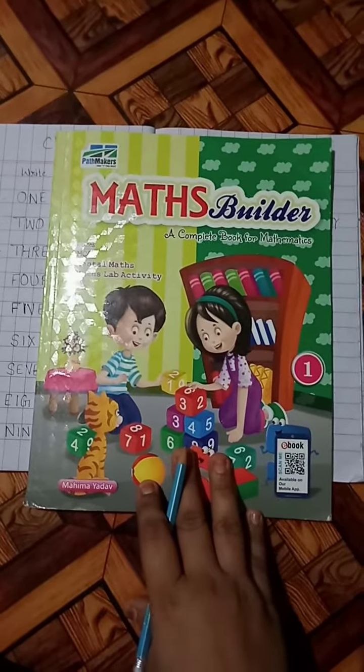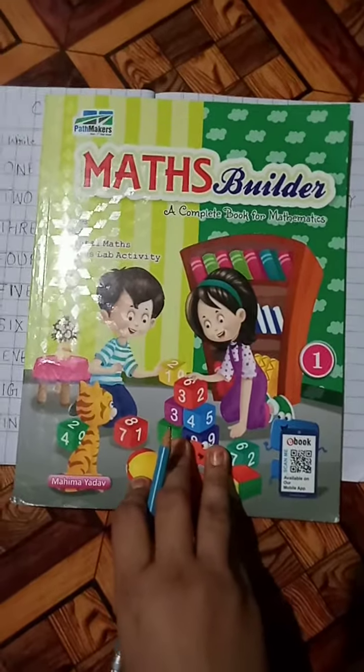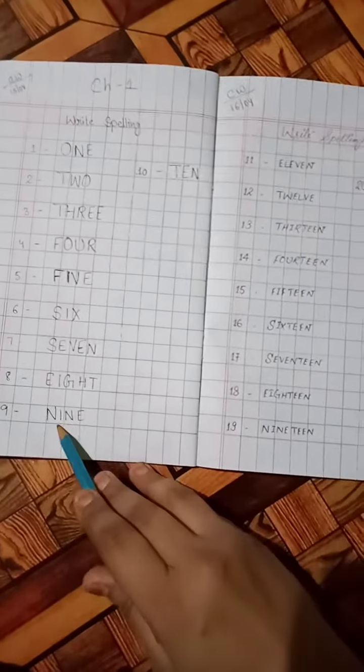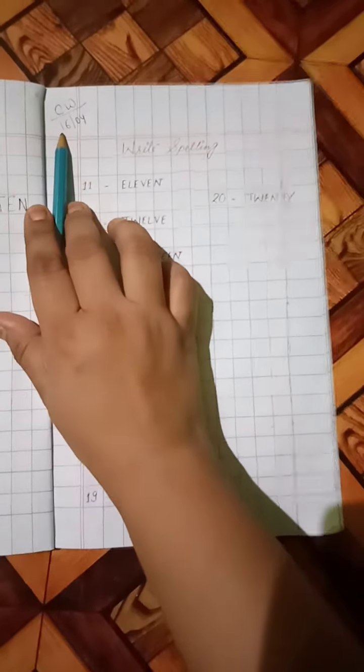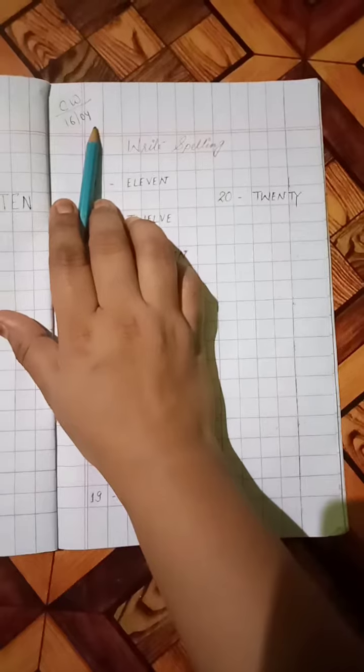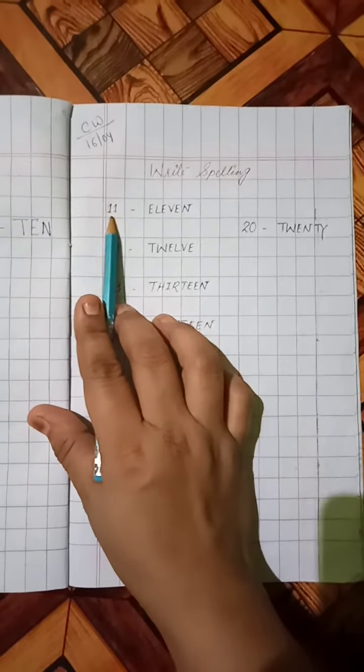Hello students, it's me, your class teacher Mishaheen. Let's start today's math writing work. As we have done yesterday, 1 to 10 spellings, now today in the next page you write the spellings of 11 to 20. First of all, you write classwork, keep today's date 16th April, and write heading write spelling.